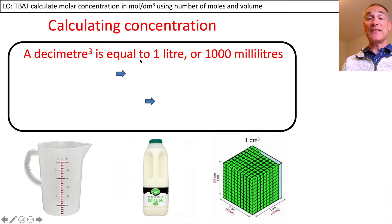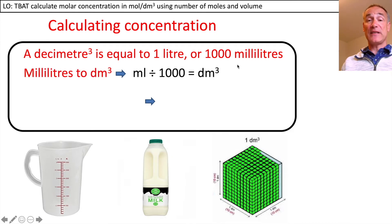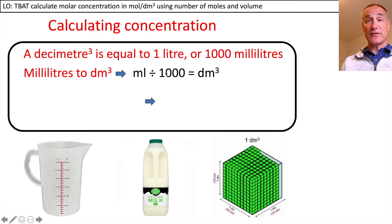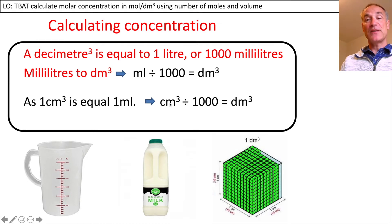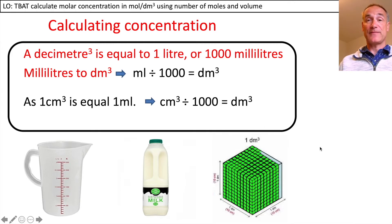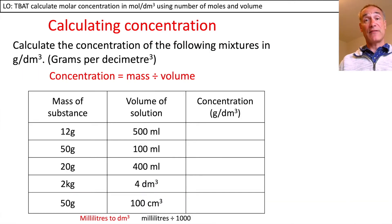A decimetre cubed is equivalent to one litre, which is a thousand millilitres. So if you want to convert millilitres into decimetres cubed, you've got to divide millilitres by a thousand, because there are a thousand millilitres in a decimetre cubed. Equally, one centimetre cubed is equal to one millilitre, so to convert from centimetres cubed into decimetres cubed you again divide by a thousand.